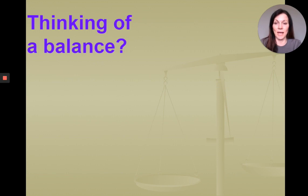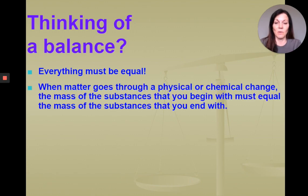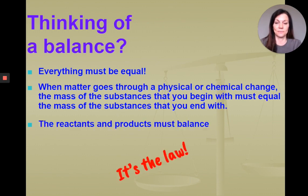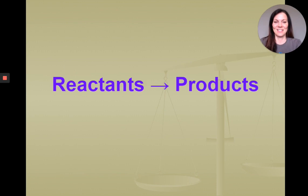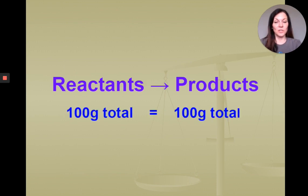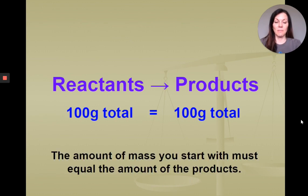So the mass of our reactants is equal to the mass of our products. We're thinking of this as a balance — everything must be equal. So when matter goes through a physical or chemical change, the mass of the substances that you begin with must be equal to the mass of the substances that you end with. So if we start with 100 grams total mass of our reactants, we would have to end with 100 grams of the mass of our products. If that measurement is off, then at some point some of that mass had to escape in some way.